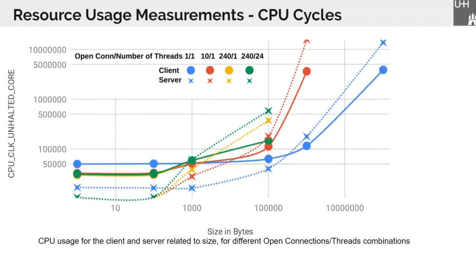Now we come to the resource usage. Here we see the evolution of the CPU cycles used for each scenario. What's interesting here is that the server seems to be consuming more CPU cycles than the client to deliver a request, which might be due to the fact that we are using the lighttpd web server without any optimization.